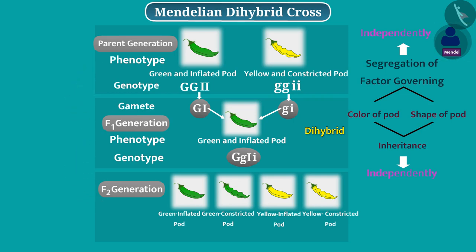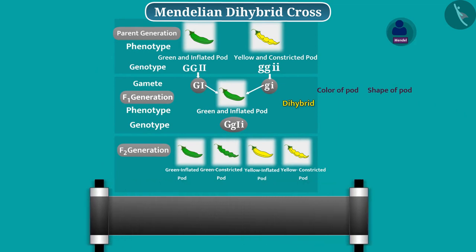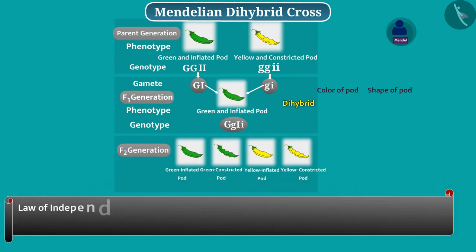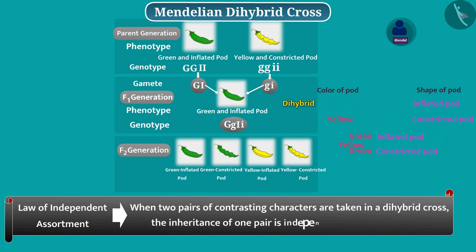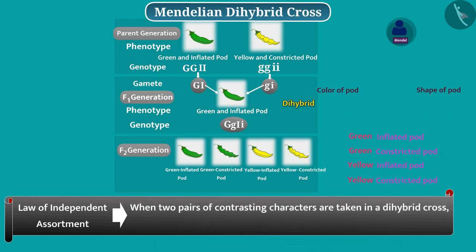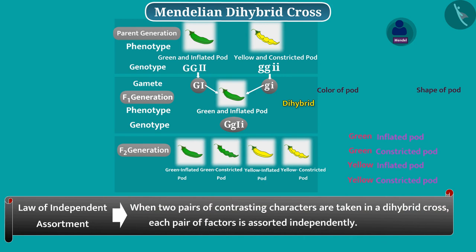On the basis of this understanding, Mendel proposed a third law of inheritance, which is called the law of independent assortment. According to this law, when two pairs of contrasting characters are taken in a dihybrid cross, the inheritance of one pair is independent of the other. In other words, when two pairs of contrasting characters are taken in a dihybrid cross, each pair of factors is assorted independently.